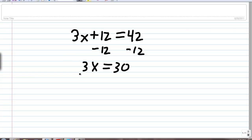And now, just like we did in the previous video, when we're in this situation where we have a number times x, we divide both sides by 3, and we will have x all alone on the left side. So now we know that x is equal to 30 divided by 3, which is 10.